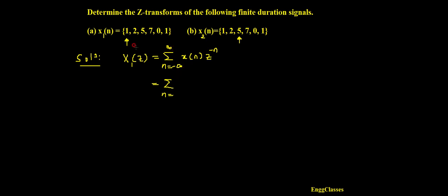For the first signal x1(n), it starts from n equals 0 and goes up to n equals 5 — that means there are six samples. So X1(z) equals the summation from n equals 0 to 5 of x(n) z to the power minus n. Let me expand this by putting in each value of n.